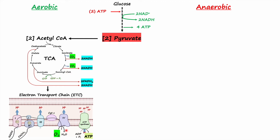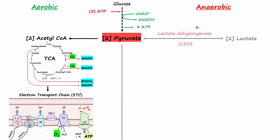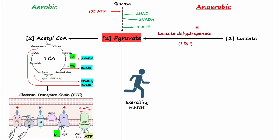In the presence of oxygen — aerobic conditions — pyruvate is oxidized to acetyl-CoA, which is then oxidized through the TCA cycle or Krebs cycle, and from there, through the electron transport chain and oxidative phosphorylation, ATP molecules are synthesized. In the absence of oxygen, the fate of pyruvate differs by organism: in vertebrates, pyruvate is converted to lactate by lactate dehydrogenase, whereas in yeast, pyruvate is converted to ethanol and carbon dioxide.